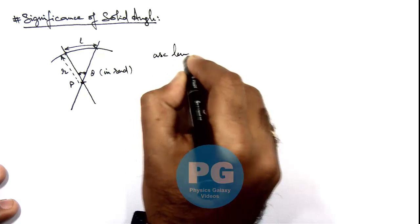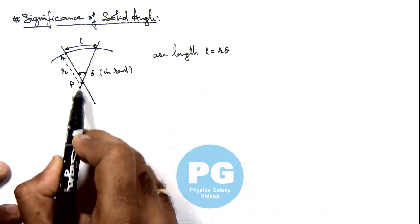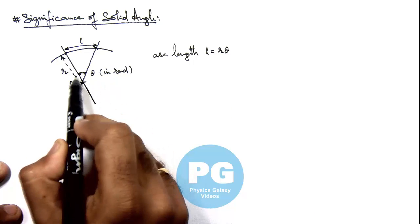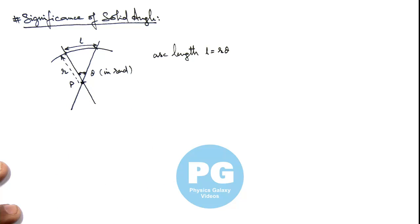Then arc length is given as r theta. This is the product of the radius of circular arc multiplied by the angle theta subtended by the circular arc at the center of circle.